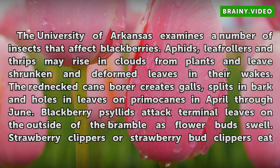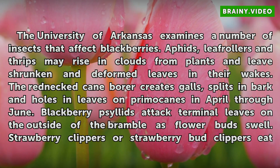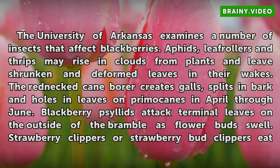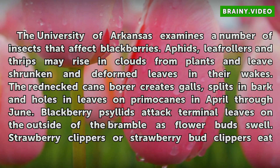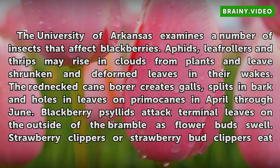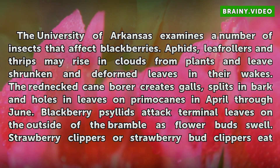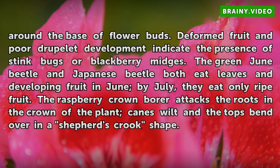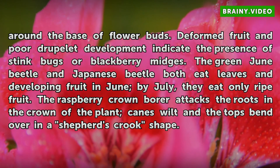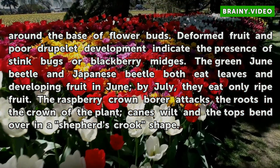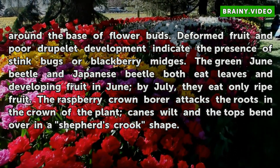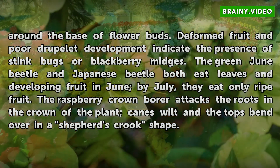The University of Arkansas examines a number of insects that affect blackberries. Aphids, leaf rollers, and thrips may rise in clouds from plants and leave shrunken and deformed leaves in their wake. The red-necked cane borer creates galls, splits in bark, and holes in leaves on primocanes in April through June. Blackberry psyllids attack terminal leaves on the outside of the bramble as flower buds swell. Strawberry bud clippers eat around the base of flower buds. Deformed fruit and poor druplet development indicate the presence of stink bugs or blackberry midges. The green June beetle and Japanese beetle both eat leaves and developing fruit in June; by July they eat only ripe fruit. The raspberry crown borer attacks the roots and crown of the plant, causing canes to wilt with tops bending over in a shepherd's crook shape.